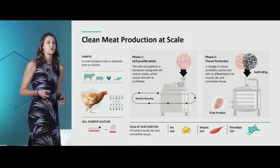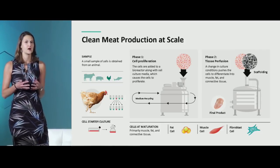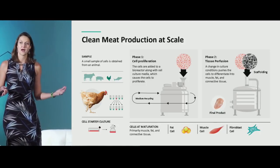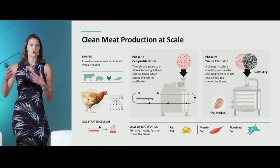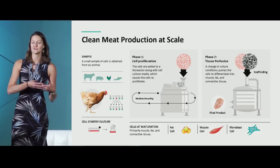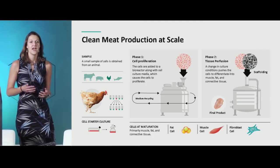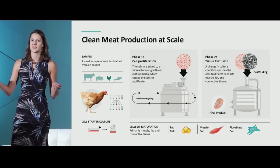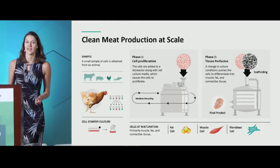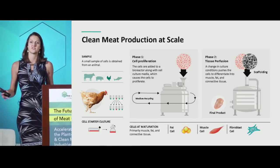To walk through what this might actually look like at scale: the first step for anyone in this space is to derive their initial starting cells. These can be taken in a number of ways — from a biopsy from an adult animal where you can work with adult stem cells, you can induce cells to go back to a pluripotent state, or you can start with embryonic stem cells. Any cells that grow and divide and are able to ultimately reach these desired final cell types — fat, muscle, etc. — are candidates for this process.